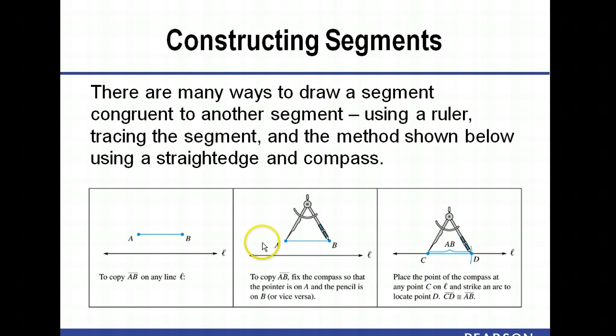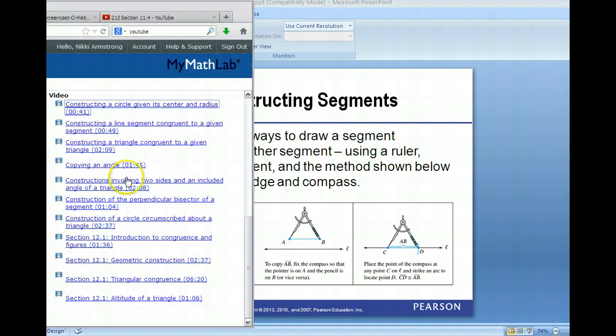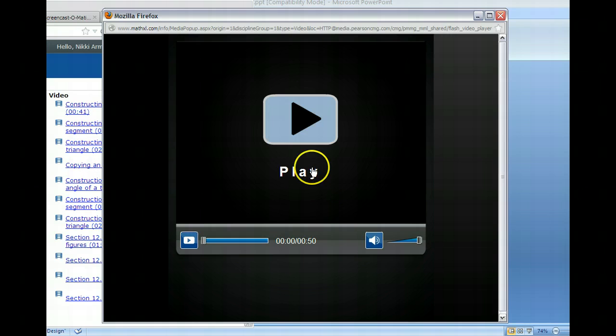So there are a lot of ways to draw a segment congruent to another segment. You could use a ruler but remember to do these Euclidean constructions we're not going to do that, right. We're going to try to use the method shown here which is using a straight edge and a compass. So instead of reading through it let's just watch another video. You're welcome to read through it if you like. Pause the video and watch it or pause the video and read it or watch what we have here which is a video demonstration.